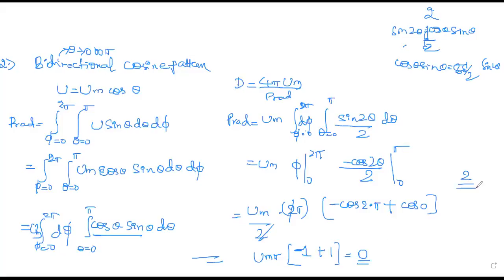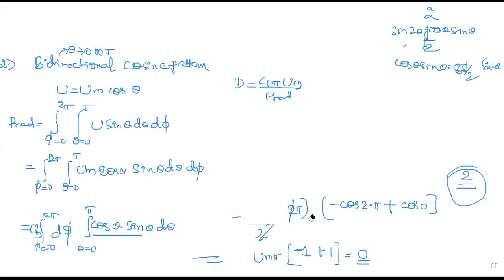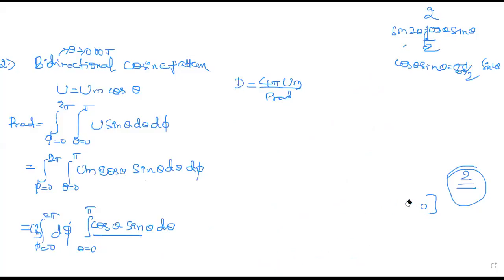When you get power radiated as 0, it means your limit value must be changed. Since directivity cannot be infinity in practical cases, you have to use the property of definite integrals. The property says: if you have ∫₀^π f(x)dx, you can write it as 2·∫₀^(π/2) f(x)dx, provided that f(x) is an odd function — meaning f(−x) = −f(x). For example, sin(−θ) = −sinθ, which is an odd function.